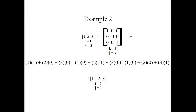Next, multiplying the row with the second column gives: 1×0 + 2×(−1) + 3×0 = −2, which is the second entry. Multiplying with the third column gives the third entry equal to 3. We are now finished.